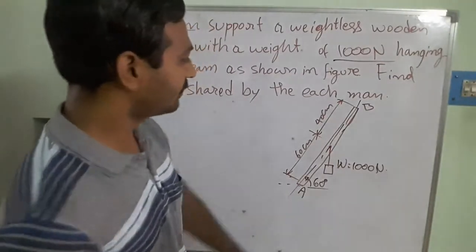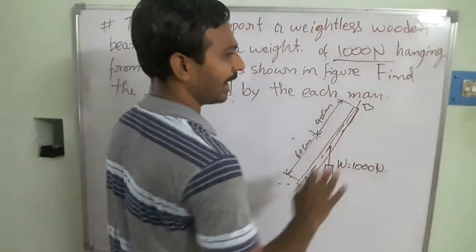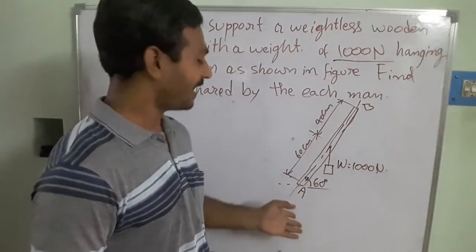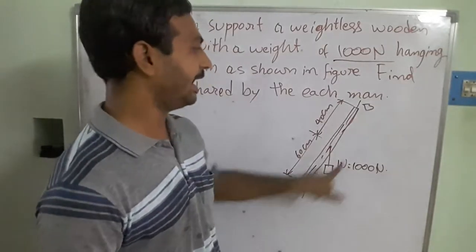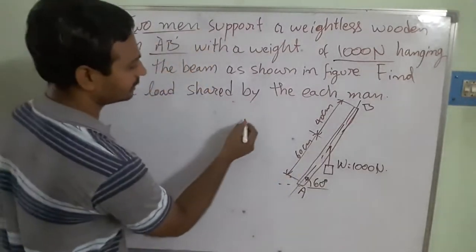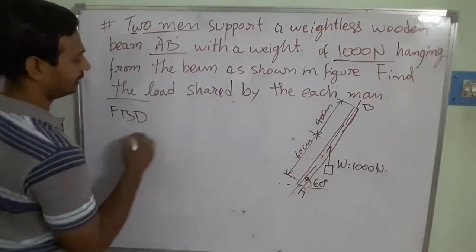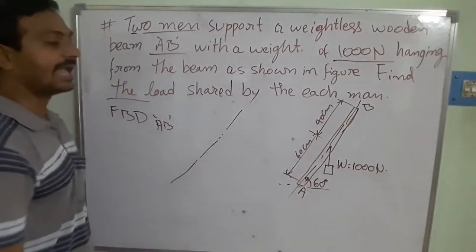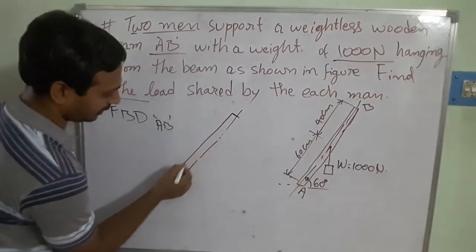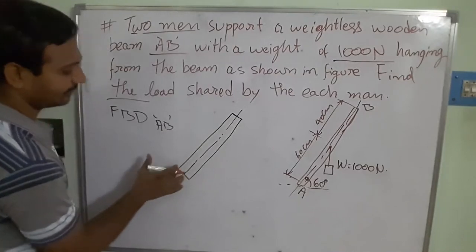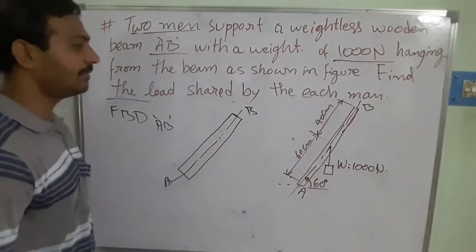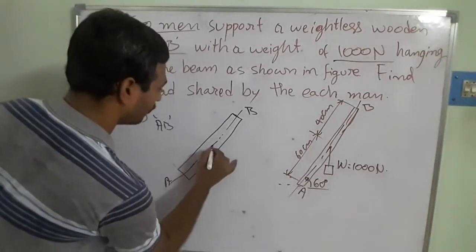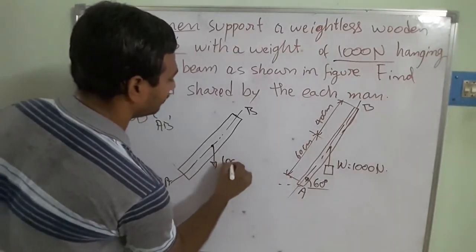The first step is to draw the free body diagram. We remove the supports — in this case, the men carrying the load on their shoulders generate a reaction force from their bodies to the beam at points A and B. So I am drawing the free body diagram for the beam. I am taking the axis of the beam, with end A on one side and end B on the other. The 1000 Newton load acts downward at a distance of 0.6 meters from A and 0.4 meters from B.